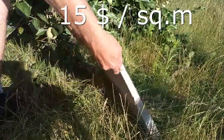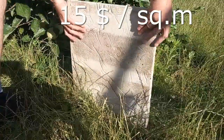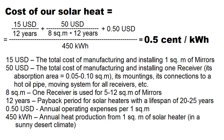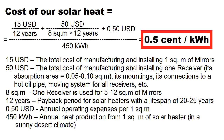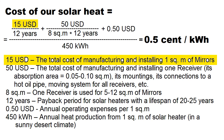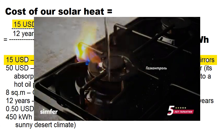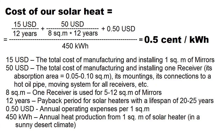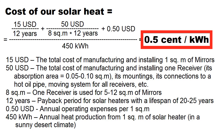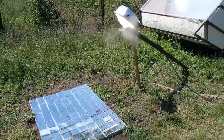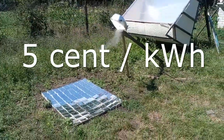The total construction cost of our mirror covering of $15 per square meter results in a cost of our solar heat of half a cent per kilowatt hour. We understand that if it exceeds $15, our solar heat will still be very cheap and approximately 10 times cheaper than the cost of heat from natural gas. If we have already reduced the cost of our solar heat to this level, half a cent per kilowatt hour, we can turn it into cheap electricity at $0.05 per kilowatt hour.